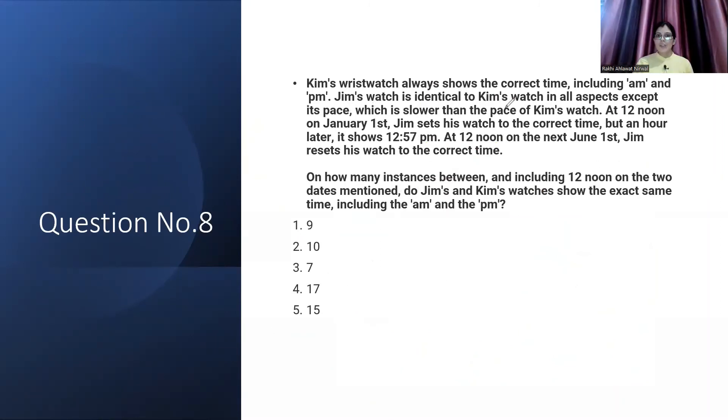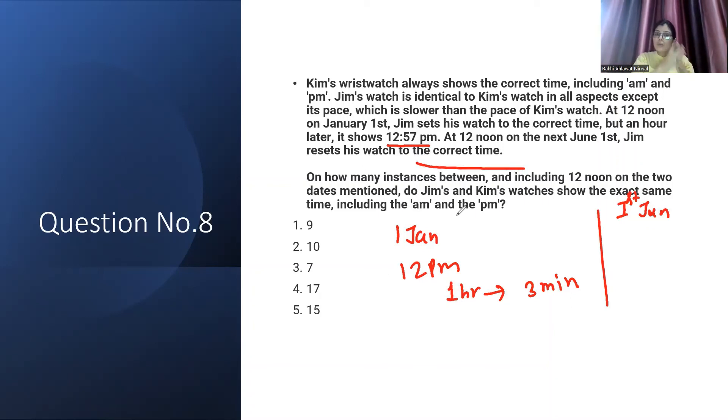Kim's wristwatch always shows the correct time including AM and PM. Jim's watch is identical to Kim's watch in all aspects except its pace. The only difference is the pace. Both watches are otherwise the same. It is slower than the pace of Kim's watch. At 12 noon on January 1st, this watch showed the correct time. After 1 hour, it shows 12:57. That means in 1 hour time period, it should have shown 1 PM, but in 1 hour it loses 3 minutes. At 12 noon on next June 1st, Jim reset his watch towards the correct time.